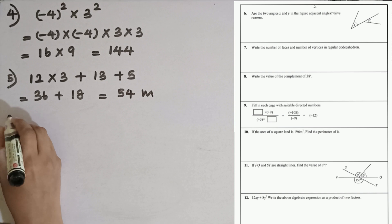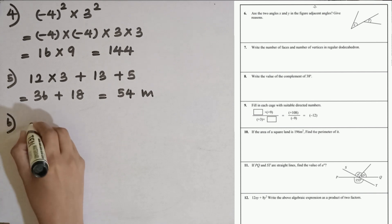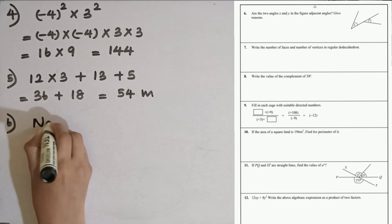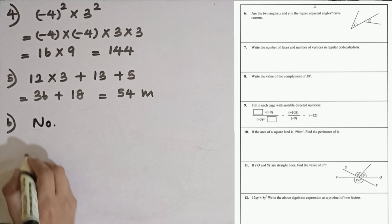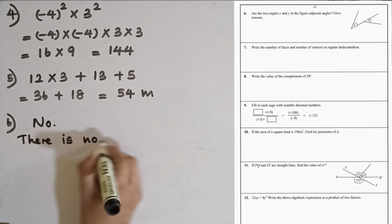Question number 6. Are the two angles X and Y in the figure adjacent angles? Give reasons. For two angles to be adjacent, there must be a common arm, a common vertex, and both angles should lie on either side of the common arm. These two angles are not adjacent. The reason is there is no common arm.